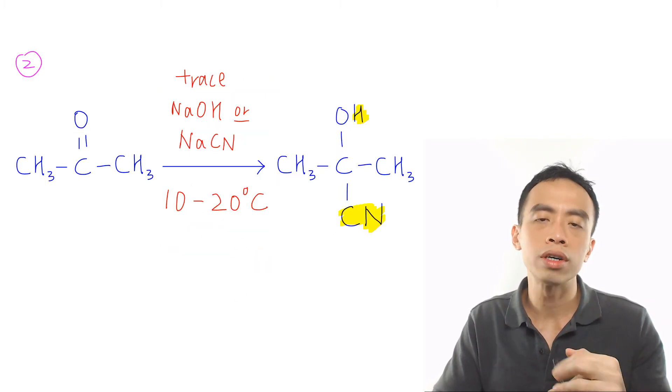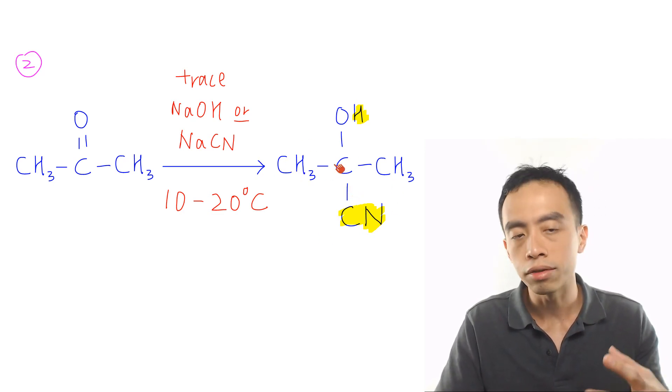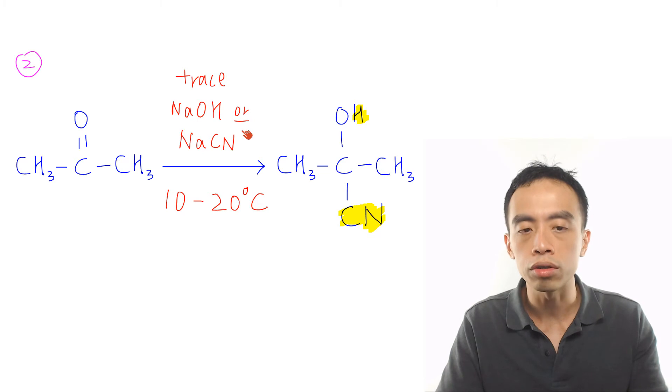Must-know reaction number 2 for ketones would be the nucleophilic addition of ketones to form cyanohydrin. Now this is done using trace NaOH or trace NaCN at 10 to 20 degrees Celsius.